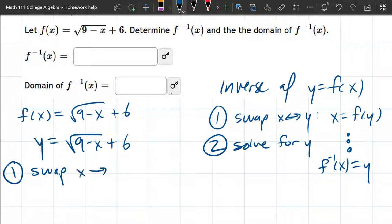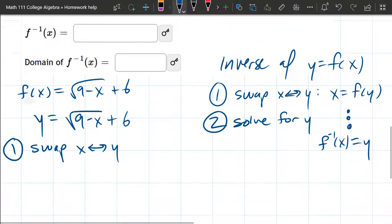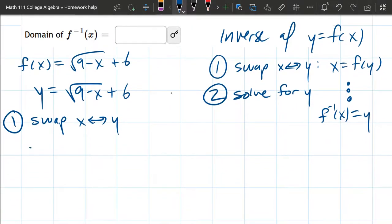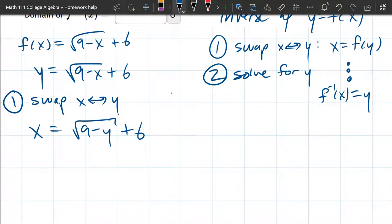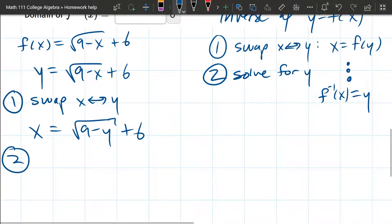Swap x with y. So I only see x once and y once, so this is a pretty easy swap. Just be careful if x appears two or three times, you have to swap all the x's for y's, all the y's for x's. Most of the time there'll only be one of each. Okay, now we're done step one. Step one is relatively easy. Step two, we got to solve now.